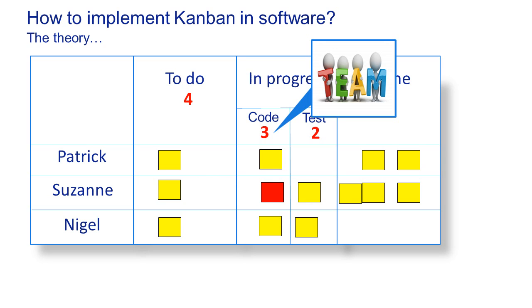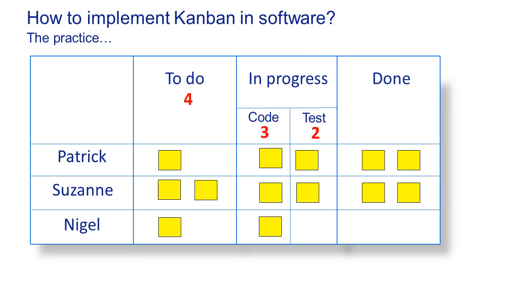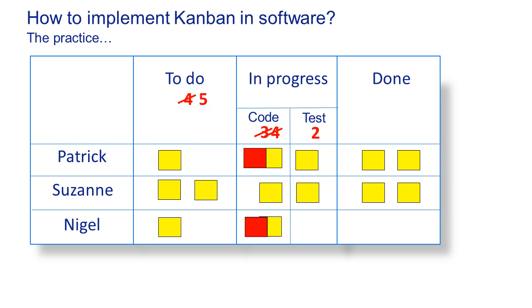In the meantime, the test column is now full, so they'll need to remove one item from there as well. That's how it works in theory. What I saw in practice was different. We had a high priority item in the to-do column with five items already, so someone said maybe the to-do limit is too low — let's put it at five. Then maybe the three under code is too low — let's put it on four. Before long, our work in progress limits became meaningless because we kept increasing them.